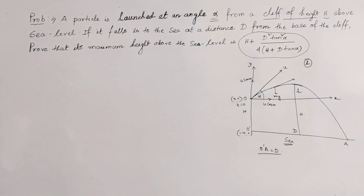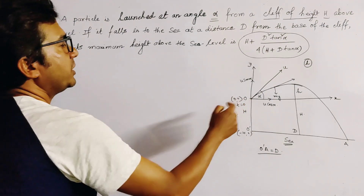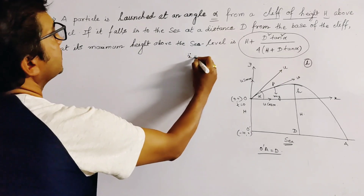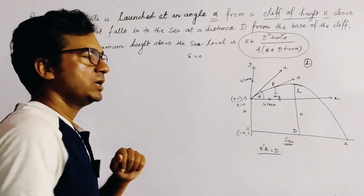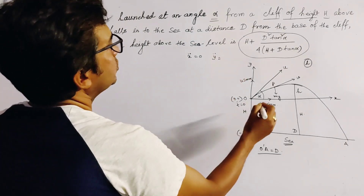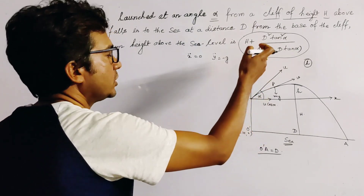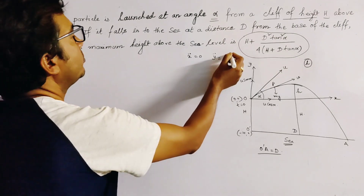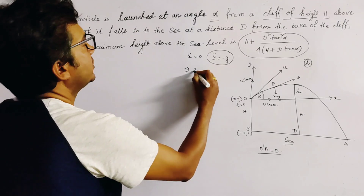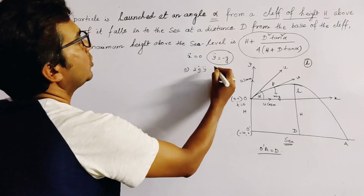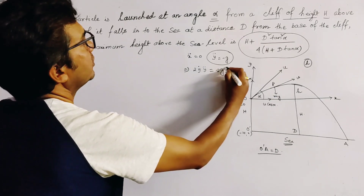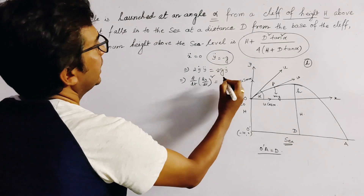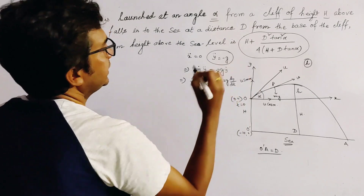The equations of motion of the particle at any point P are: x double dot equals 0, because there is no force along the x-axis; and y double dot equals minus g, because there is only the gravitational force Mg acting downward. Cancelling M from both sides, we get these two equations of motion.